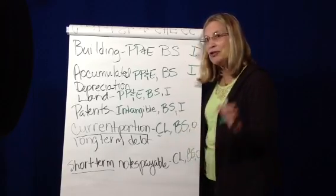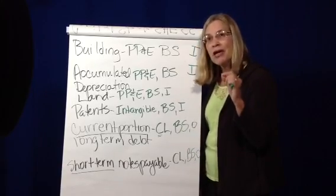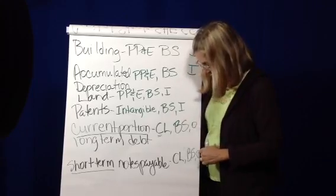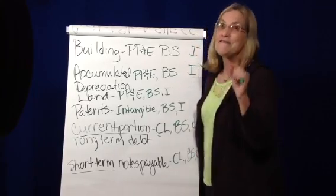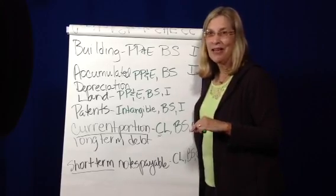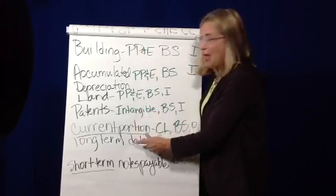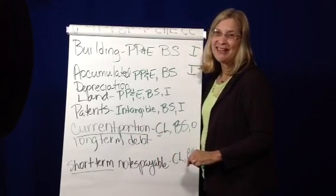And remember, those are on the balance sheet, but when we look at cash flow activities, those show up in not the operating section, but in the financing section. So that's a little bit about some non-current assets and some current liabilities. Thank you.